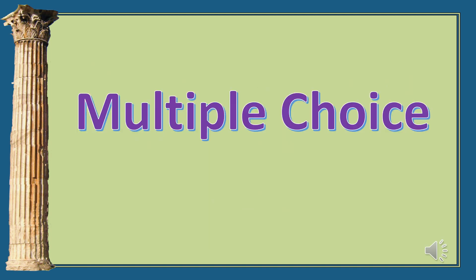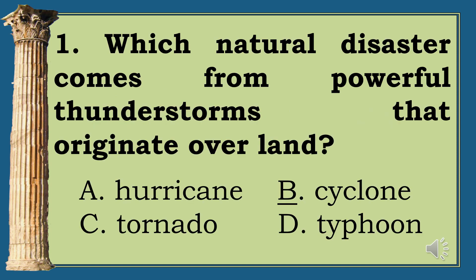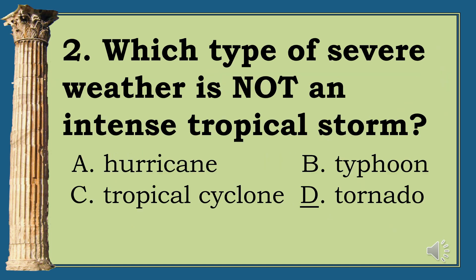Multiple choice. Question 1: Which natural disaster comes from powerful thunderstorms that originate over land? A. Hurricane. B. Cyclone. C. Tornado. D. Typhoon. The correct answer is letter C, Tornado. Question 2: Which type of severe weather is not an intense tropical storm? A. Hurricane. B. Typhoon. C. Tropical cyclone. D. Tornado. The correct answer is letter D.